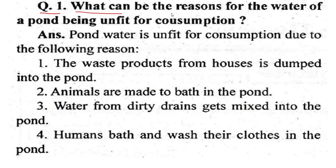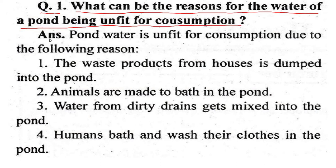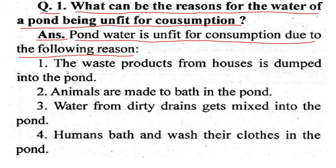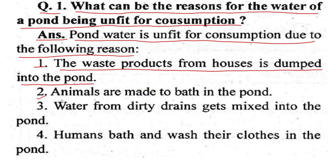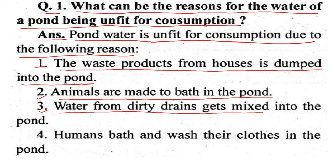Question one: What can be the reason for the water of a pond being unfit for consumption? Answer: Pond water is unfit for consumption due to the following reasons. First, waste products from houses are dumped into the pond. Second, animals are made to bathe in the pond. Third, water from dirty drains gets mixed into the pond. Fourth, humans bathe and wash their clothes in the pond.